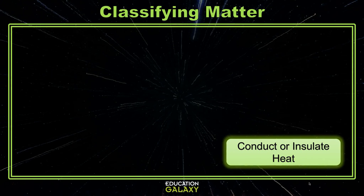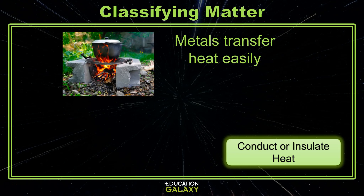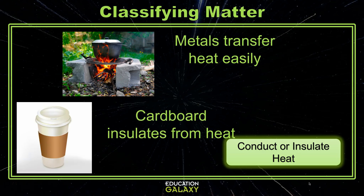Lastly, the ability to conduct or insulate heat or electricity is another way to describe matter. Some materials are great conductors of heat, like metal cooking pans, which heat up quickly and transfer the heat to the food you're cooking. Other materials insulate heat, like the cardboard sleeve around a cup of hot chocolate. The sleeve keeps the heat of the liquid from reaching your hands.